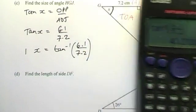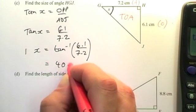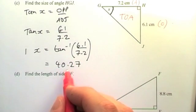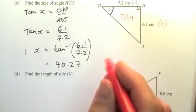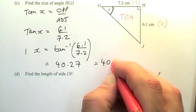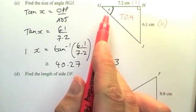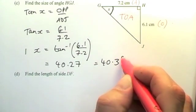So that equals 40.27, and to three figures, that's going to be, I've got to go up with this fourth figure here, so that's going to be 40.3. Now this is an angle remember, so it's not centimeters. It is actually 40.3 degrees.